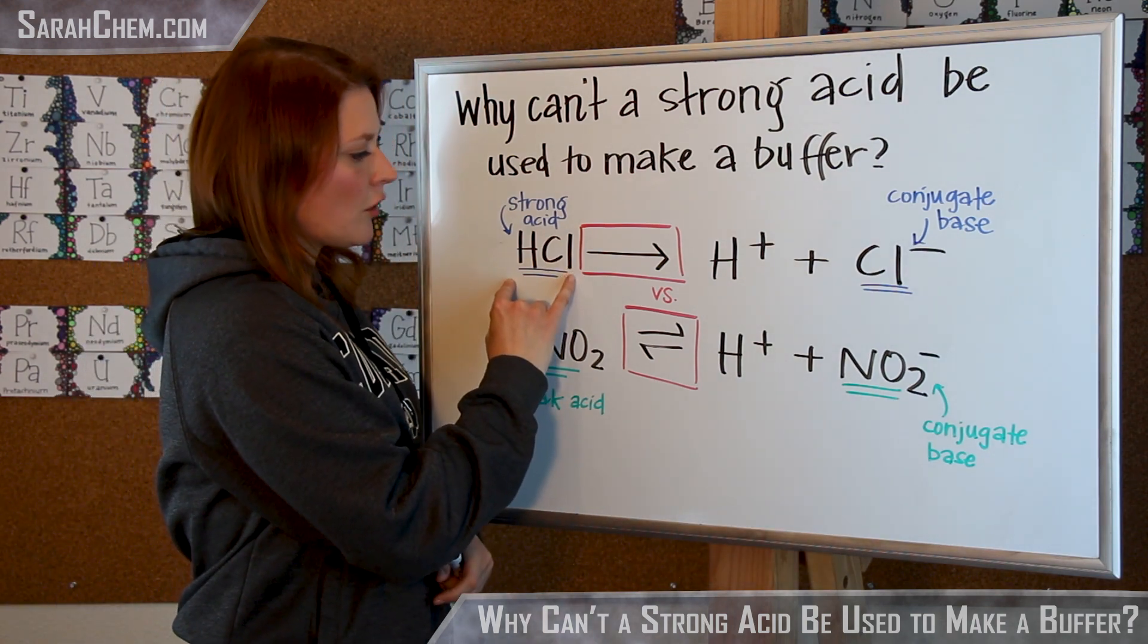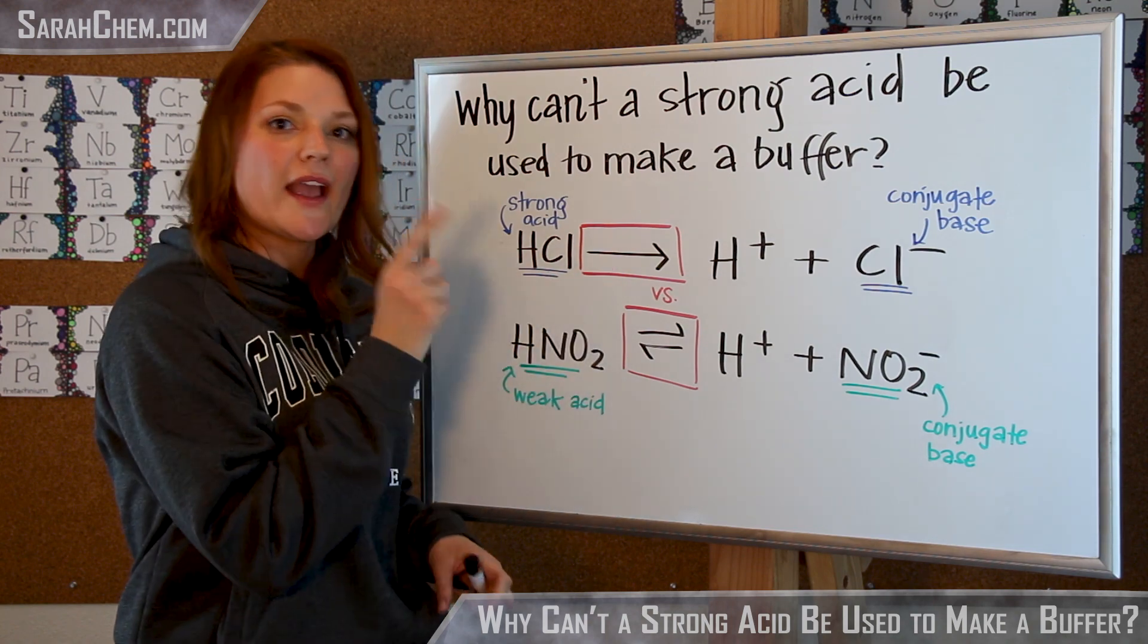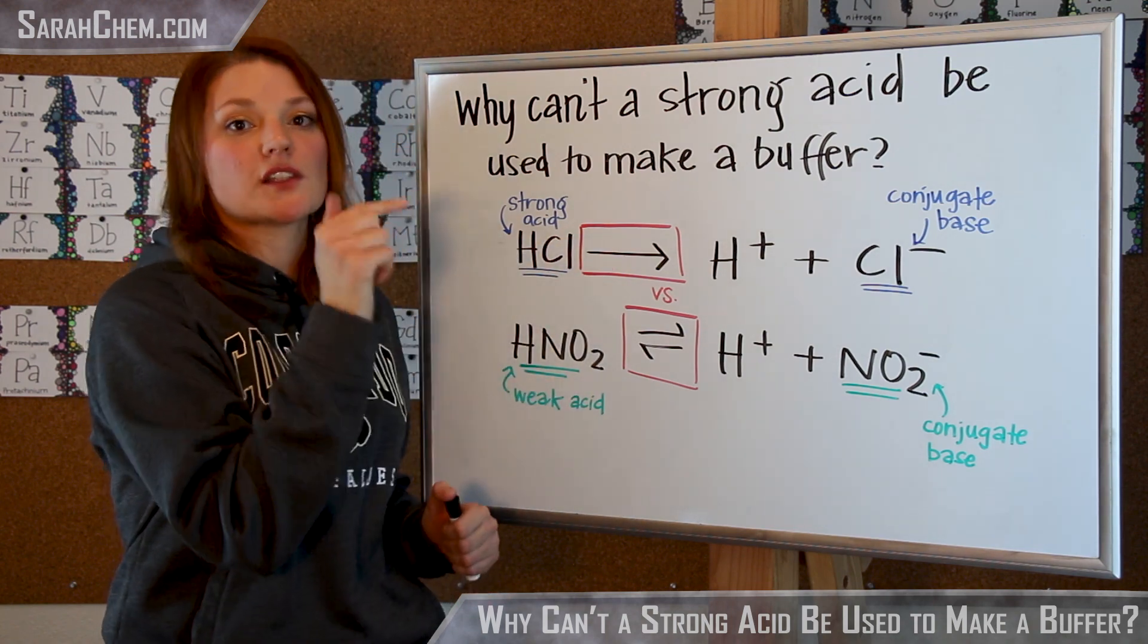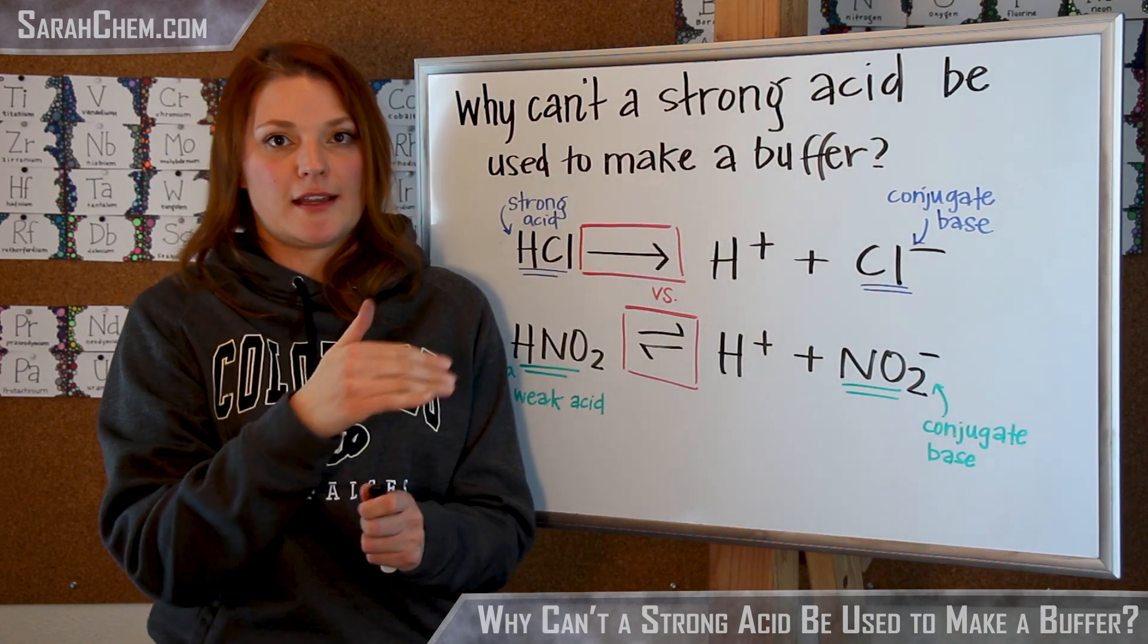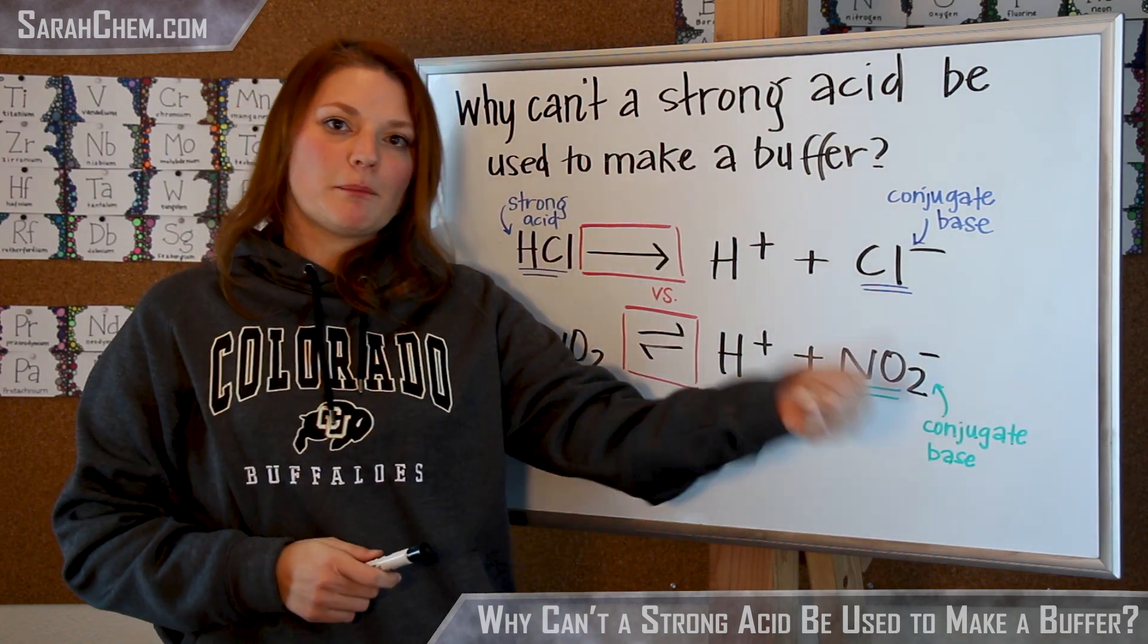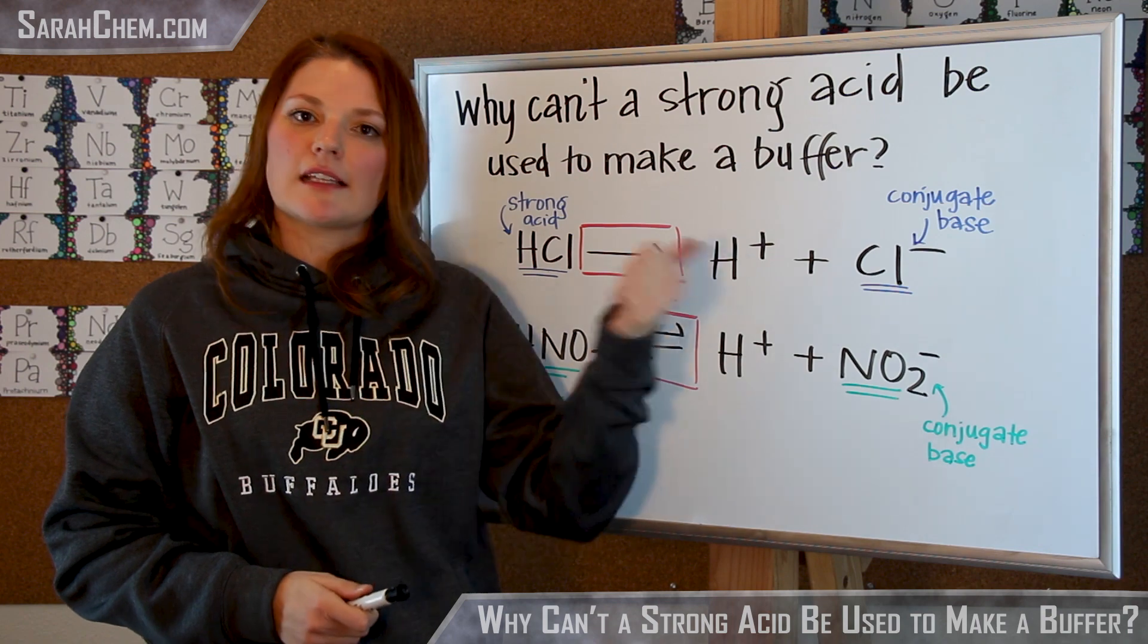If we take a look at HCl, it's a strong acid, which means it gets a one-way arrow. It's going to fully dissociate, making H+, and then its conjugate base, Cl-. So now that conjugate base is not going to react with an acid if I put it in solution.